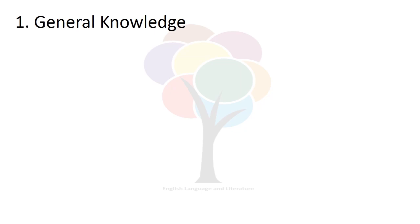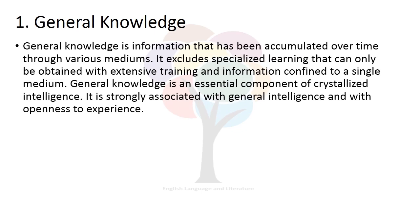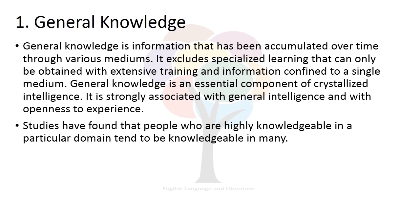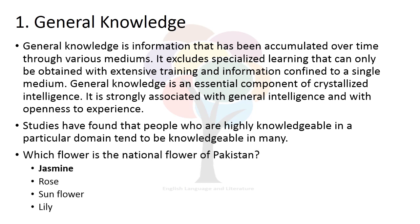Let's begin with the first module, General Knowledge. General Knowledge is information that has been accumulated over time through various mediums. It excludes specialized learning that can only be obtained with extensive training and information confined to a single medium. General Knowledge is an essential component of crystallized intelligence, strongly associated with general intelligence and with openness to experience. Studies have found that people who are highly knowledgeable in a particular domain tend to be knowledgeable in many. For example, you may be asked: 'Which flower is the national flower of Pakistan?' — Jasmine, Rose, Sunflower, or Lily. The right option is Jasmine. Jasmine is the national flower of Pakistan.